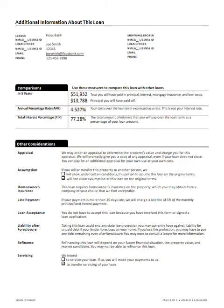This page has a little bit of additional information about the loan. It shows you that in five years you'll have paid $51,932 in total, which will include your principal, interest, mortgage insurance, and other loan costs. $13,788 will be applied towards your principal. You'll see the annual percentage rate is 4.537%, and that's your total cost over the loan term expressed as a rate.